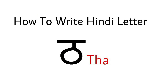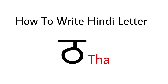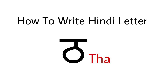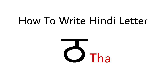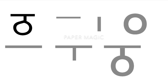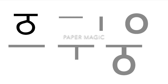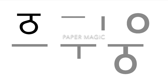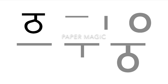Now let us see how to write Hindi consonant or alphabet THA. To write Hindi consonant THA, we will use a sleeping line, a small standing line, and an English capital letter O shape or a circle.